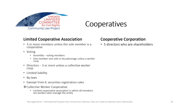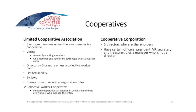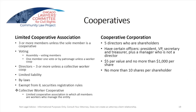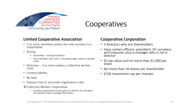There's also the cooperative corporation, which means having five directors who are shareholders. You have certain officers: president, VP, secretary, treasurer. You also have to have a manager who is not a director — they want a certain degree of independence there. Stock has to be at least five dollars, and can't be any more than $1,000 a share. You can't have more than 10 shares per shareholder with the cooperative corporation. There's a $10,000 investment cap. There are a lot of rules around having a cooperative.